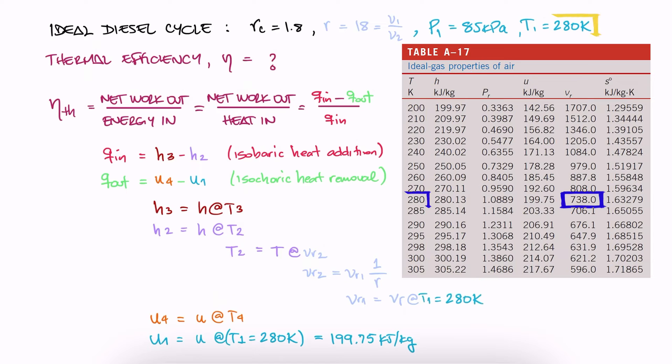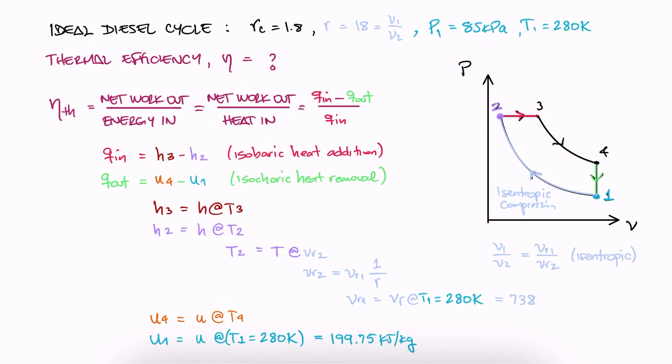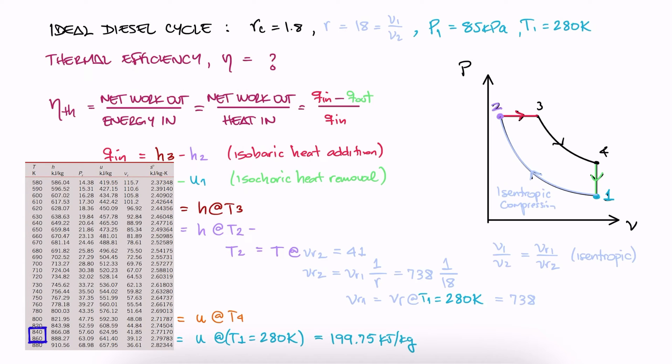Therefore, we look up Vr1 for the T1 value we got, we substitute it in the relative volumes expression to find Vr2, and we find the T2 that corresponds to Vr2 by interpolating.